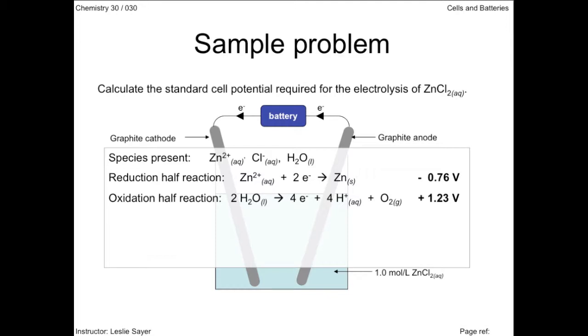We then apply our equation to calculate the cell's standard electrical potential. The standard cell potential required for the electrolysis of zinc chloride solution is 1.99 volts.